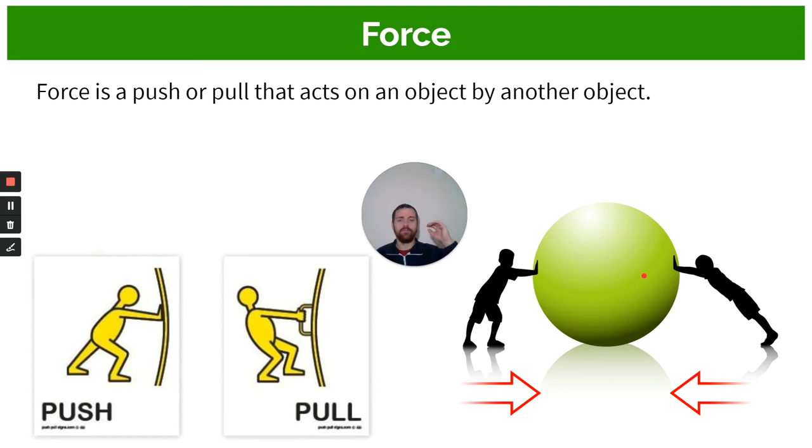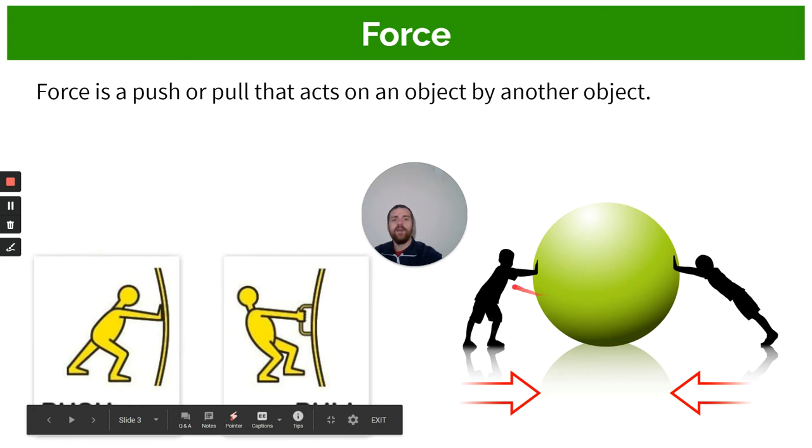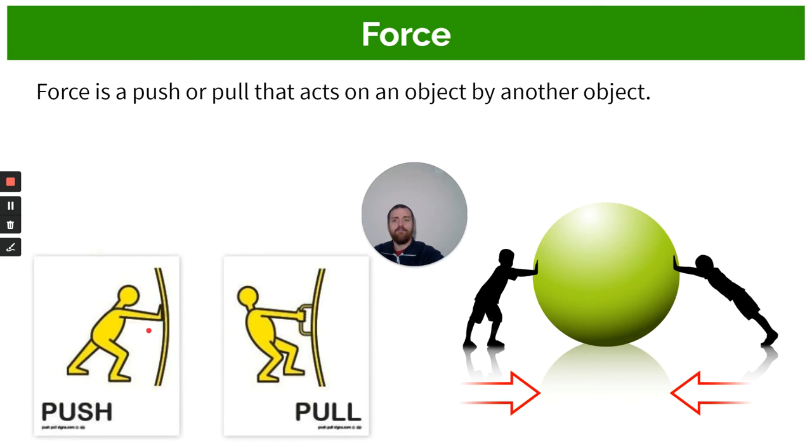So this object is experiencing force which is being created by this boy and being created by this boy. Over here we have the door and this is experiencing a pushing force by this guy. So this object this human is creating a force on this object the door by pushing. Here's another example and it's the opposite but it's still a force. This human is creating a force on the door and the door is experiencing a pulling force created by him. So a force is a push or a pull that acts on an object by another object.